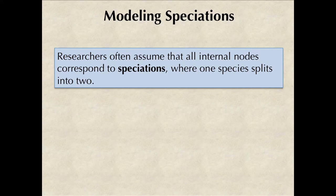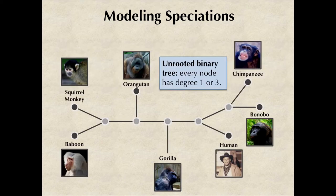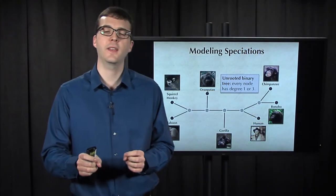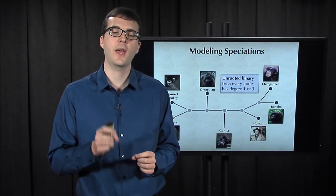In practice, researchers often assume that every internal node of a phylogeny corresponds to a speciation event, which is defined as an event where one species divides into two. In this case, we need to place limits on the internal nodes of the tree. For example, if we're working with unrooted trees, our requirement is that every internal node needs to have degree three.